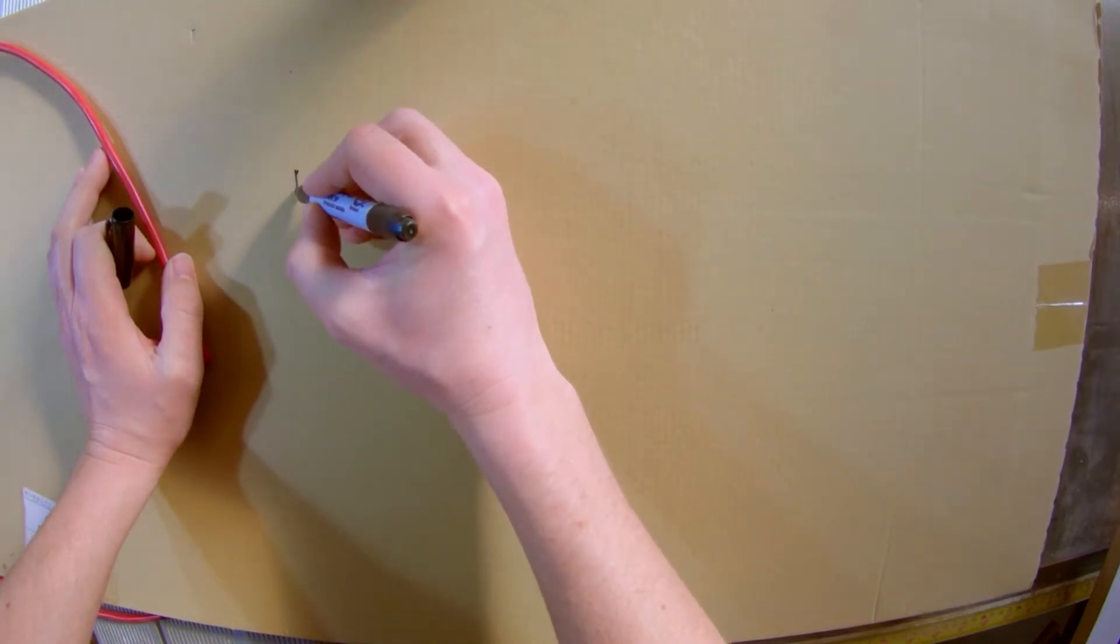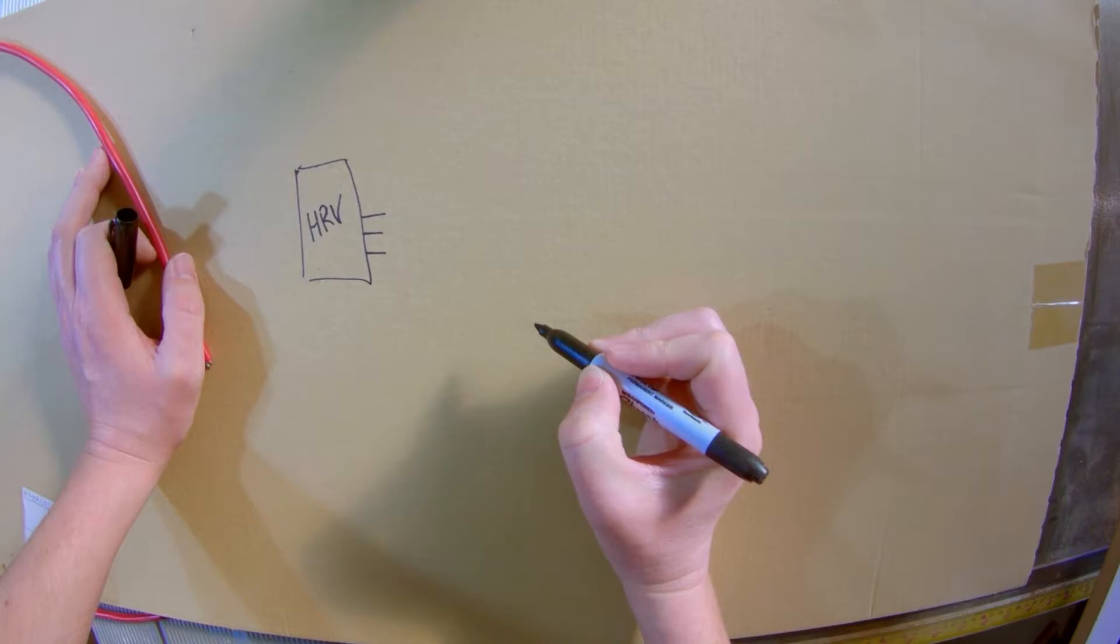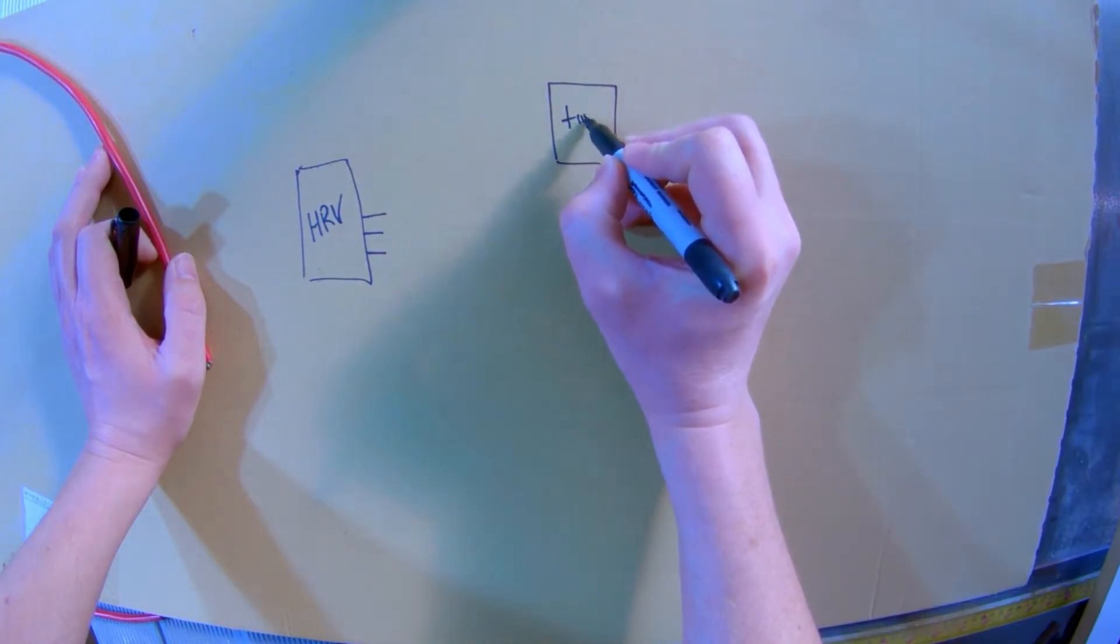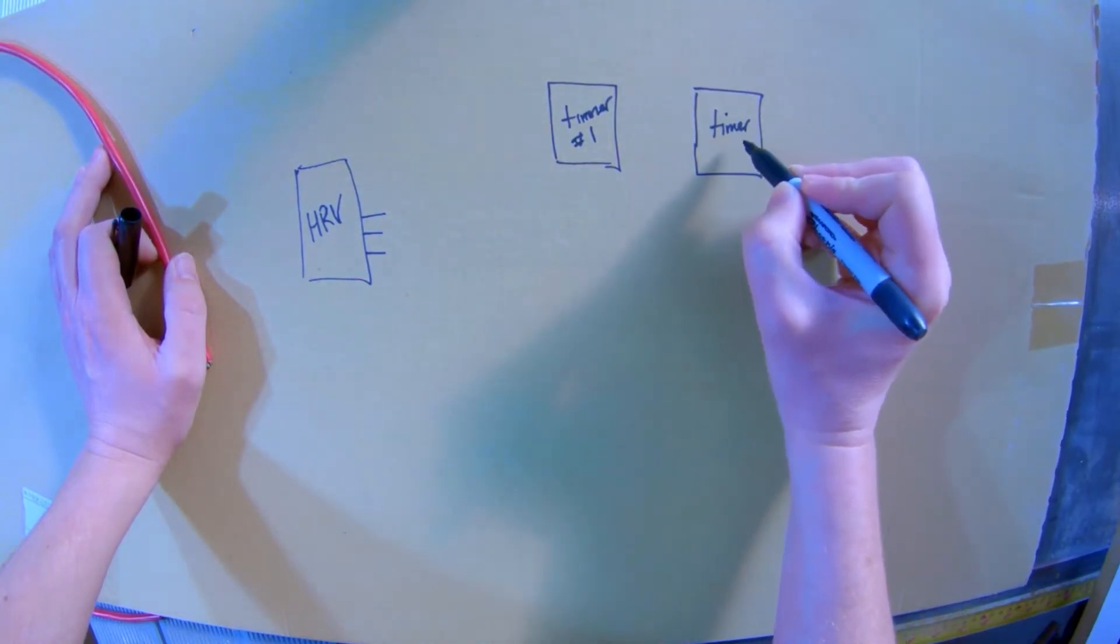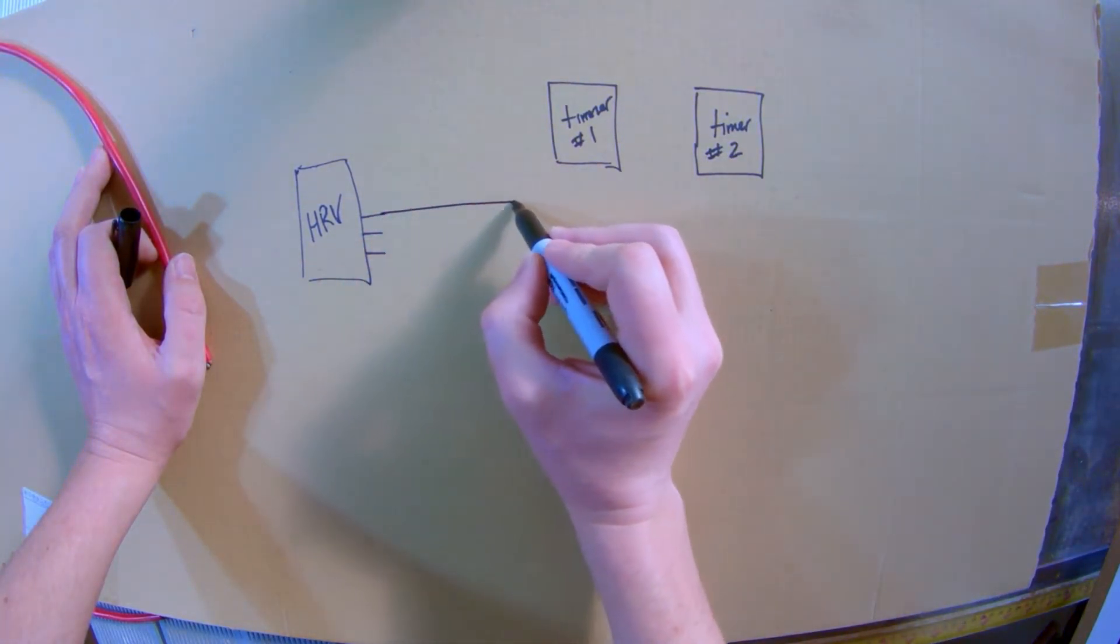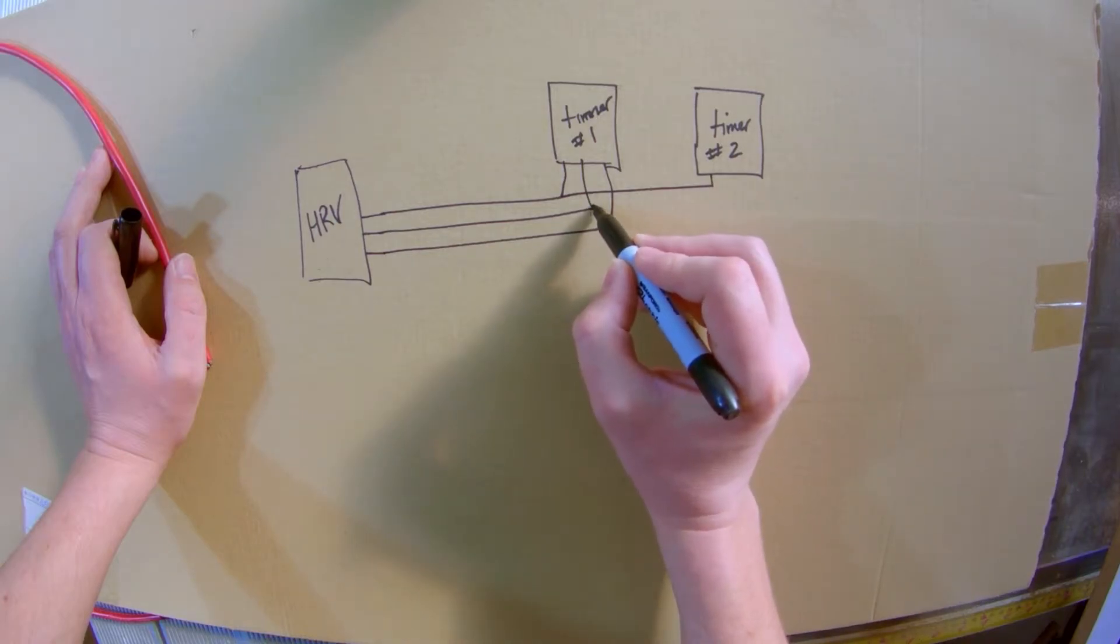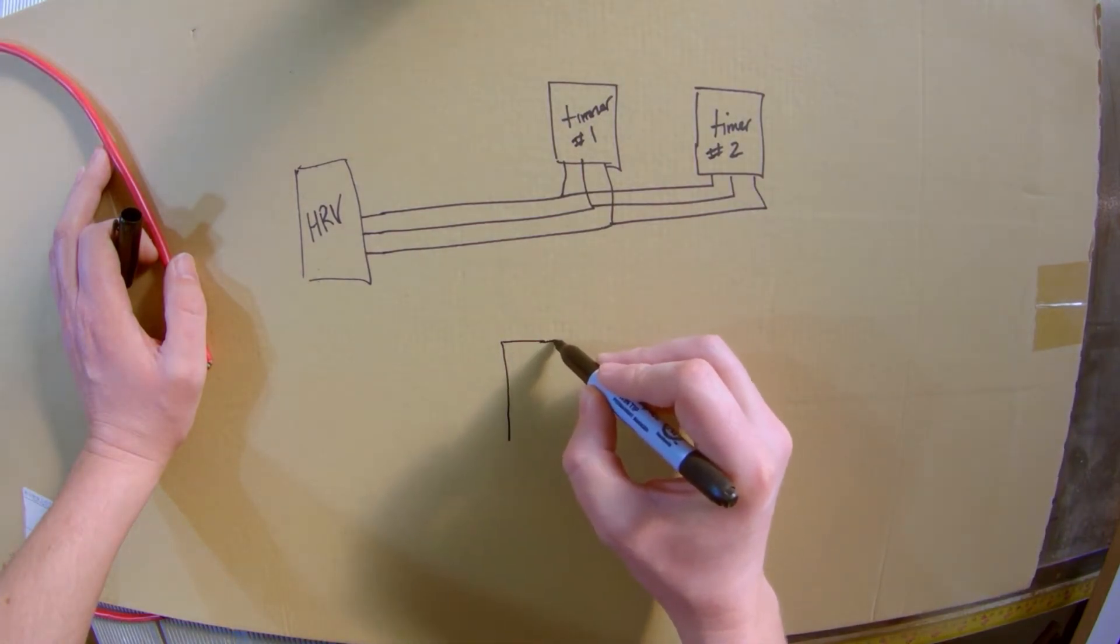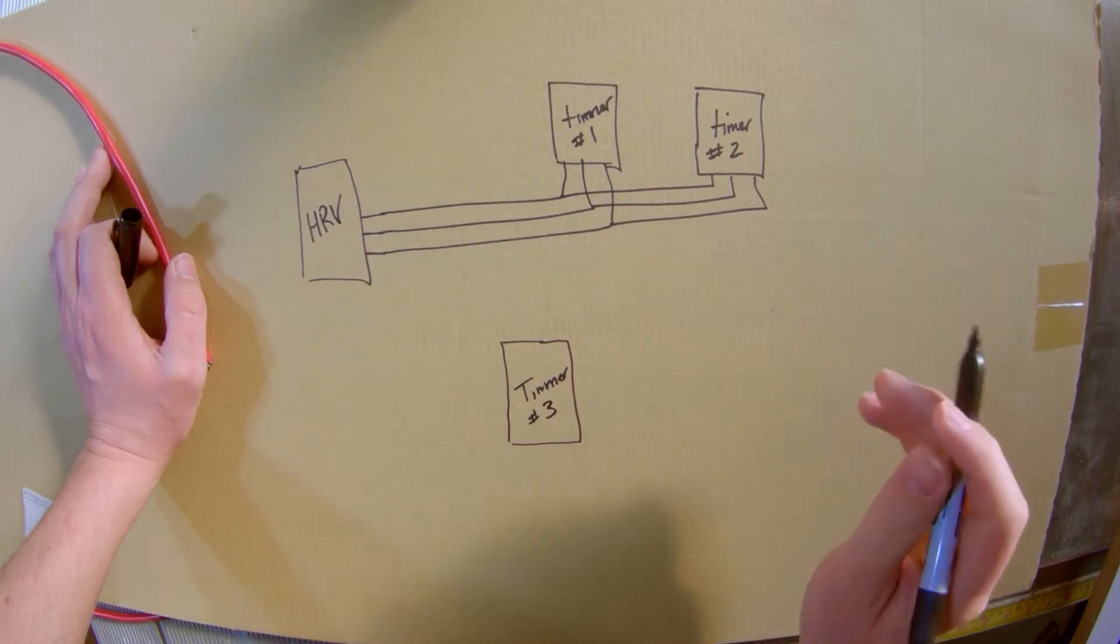So when we look at how things are currently wired in your system, you've got your heat recovery ventilator and then you've got your three connectors coming off of it and then that's going to your timer number one, number two, etc. And so those are wired in like this. And so what we want to do is put timer number three in. So you get two options.